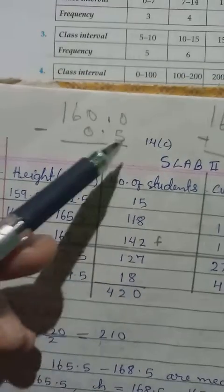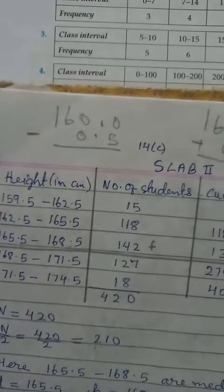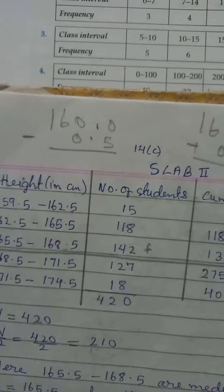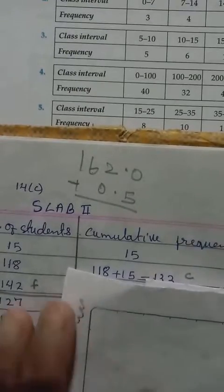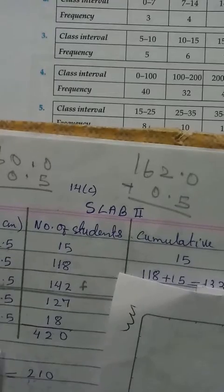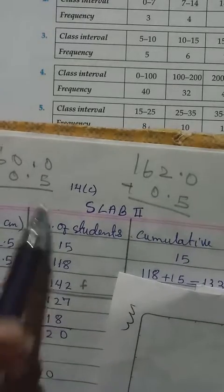Then the number of students already given from the question. Next we have to find the cumulative frequency. How to find the cumulative frequency? The cumulative frequency we have to add as we go down.